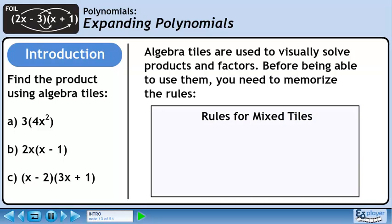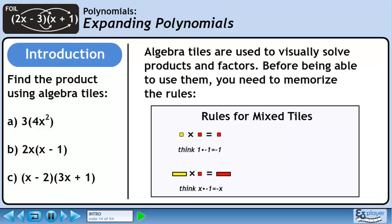Now we'll look at the rules for tiles with different colors. A small yellow square times a small red square is a small red square. Think of 1 times minus 1 equals minus 1.